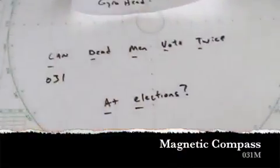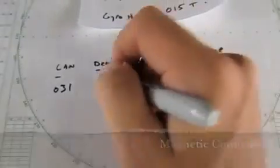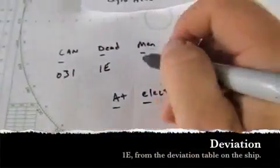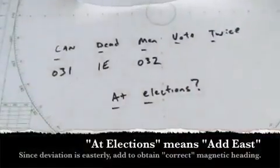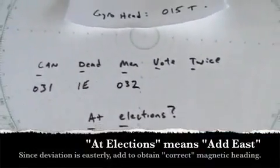So our magnetic compass was 031 degrees magnetic, and we're going to correct it. So we're going to add our deviation, which is 1 east, and we obtain 032. We're adding east. So that's the correct magnetic heading.